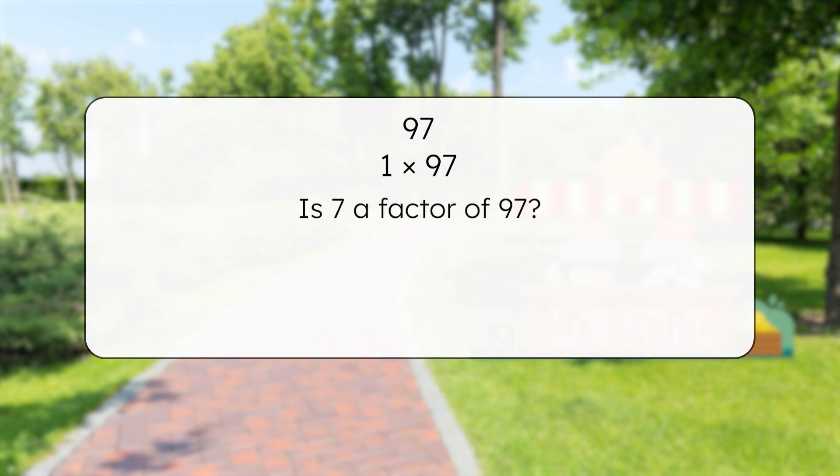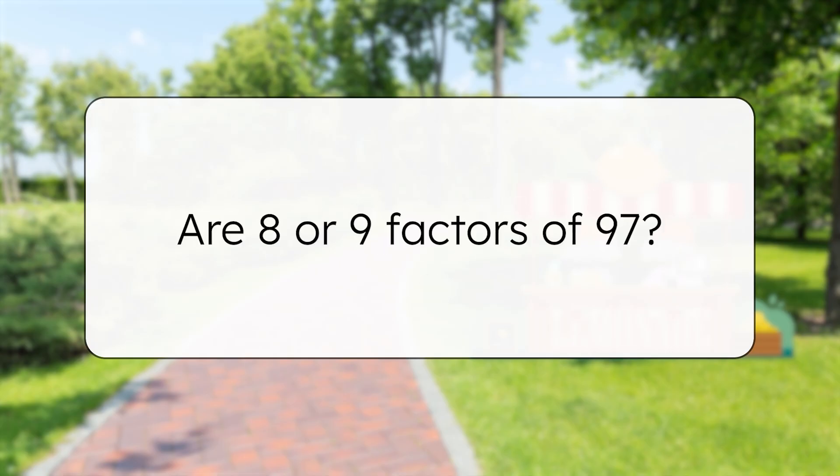For 7, we can jump up to 7 times 12, which is 84, and then skip count on from there: 91, 98. Nope, 7 isn't a factor of 97. Pause here to figure out if 8 or 9 are factors of 97 in your guided notes.